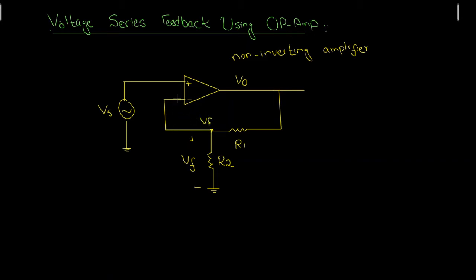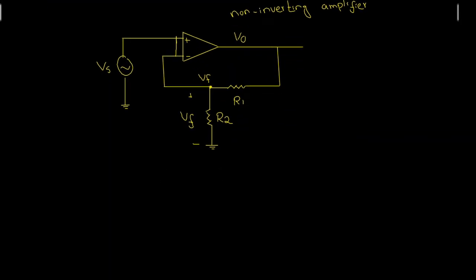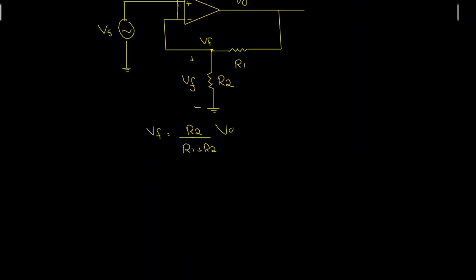The feedback is connected in series with Vs because these two are shorted out, so the feedback signal and the input voltage are in series. To find beta, we know that Vf = R2 divided by (R1 + R2) times V0, using the voltage divider rule. This means Vf/V0 = R2 divided by (R1 + R2).